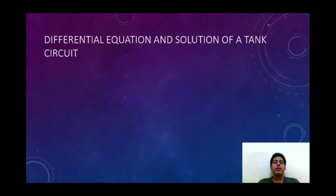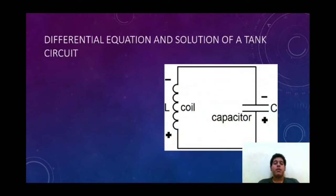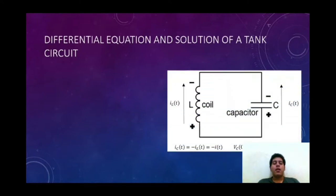Now, the differential equation and solution of a tank circuit. We have a system of LC circuit where the coil and capacitor are in parallel. We have to assume that the capacitor has a current in the opposite direction, and we are going to express this current as only one current of the system.